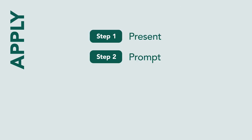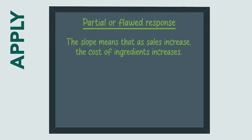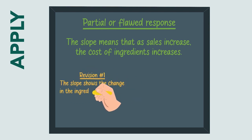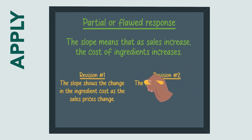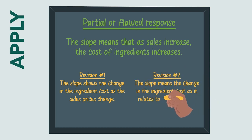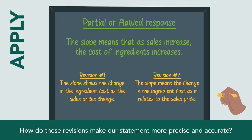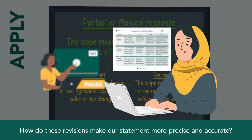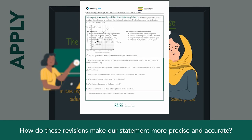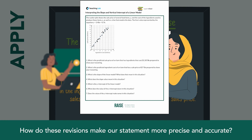After students have the opportunity to work with their peers to identify the errors or ambiguity, analyze the statement in light of their own understanding of the problem, and work on proposing a draft response, the teacher has students share their drafts. Let's see him do this. Our partial or flawed statement is: The slope means that as sales increase, the cost of ingredients increases. Let's consider two revisions from our class: The slope shows the change in the ingredient cost as the sales price change; and The slope means the change in the ingredient cost as it relates to the sales price. How do these revisions make our statement more precise and accurate? Pause the video now and compare the students' improvements to what you have documented on your personal note catcher.